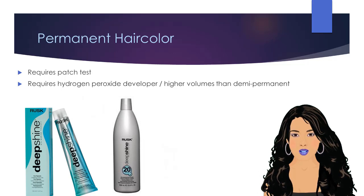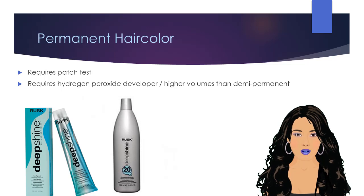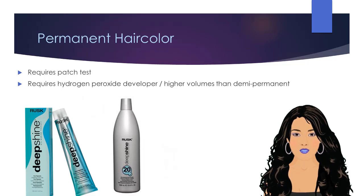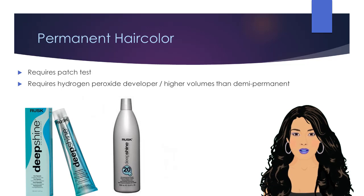Generally, the developers used for permanent hair color will depend on the color formulation, and may require the use of higher volumes of developer than those required for demi-permanent colors.